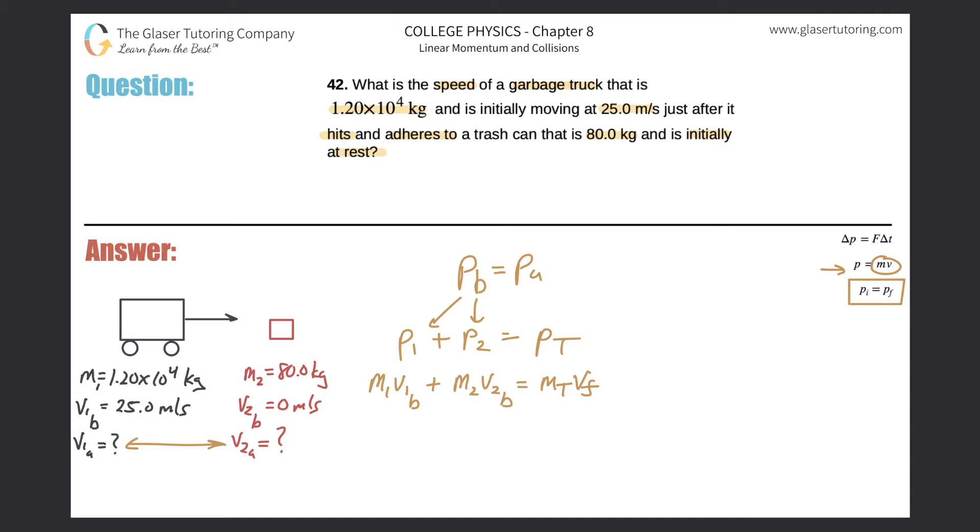So now what are we being asked? It says the speed of the garbage truck right after the collision. Remember that the speed of the garbage truck after the collision would be the same as the speed of the trash can, which is the same as the speed of the whole thing because they're stuck together. Therefore I'm looking for the final velocity. So simply divide out the total mass from both sides. And now let's rewrite our equation.